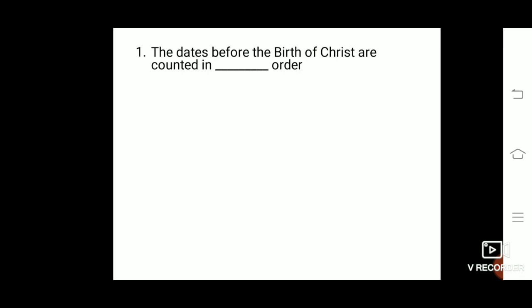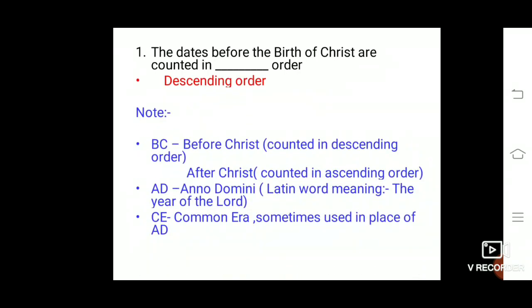The first question: dates before the birth of Christ are counted in which order? They are counted in descending order. Always note that BC, that is Before Christ, is counted in descending order, whereas after Christ it is counted in ascending order. AD is Anno Domini, a Latin word meaning 'the year of the Lord.' CE stands for Common Era, sometimes used in place of AD.